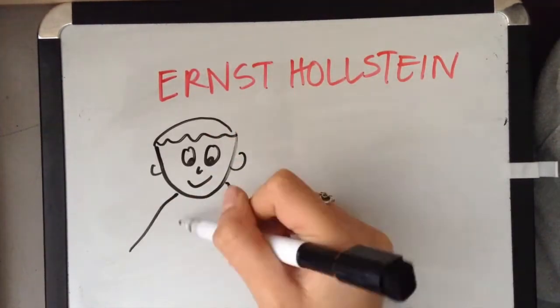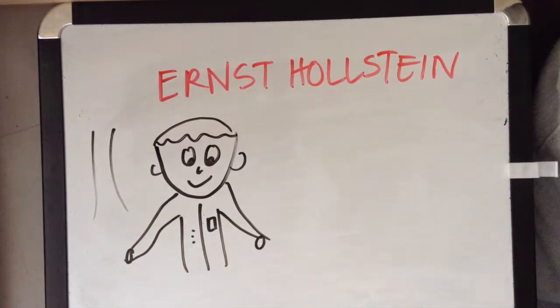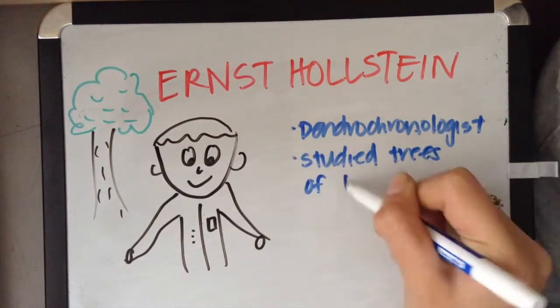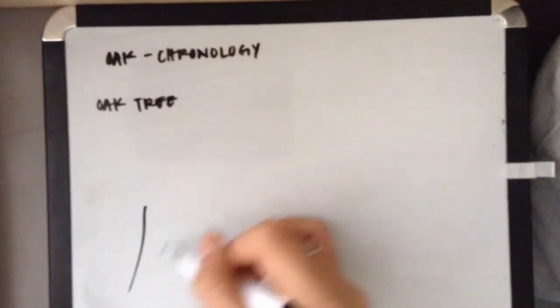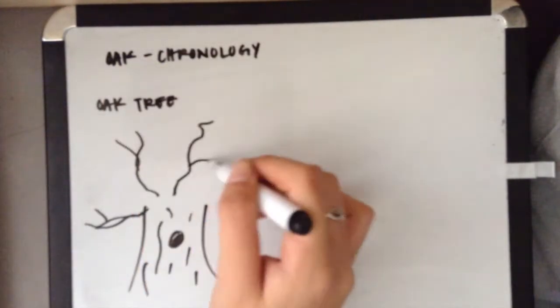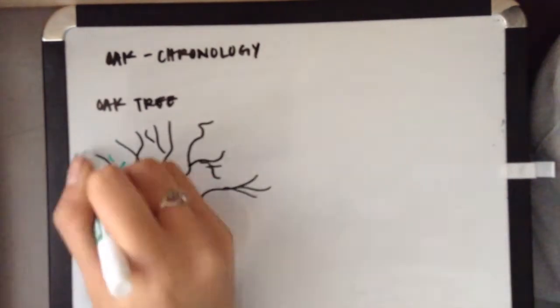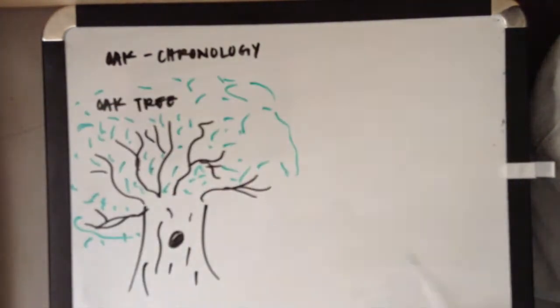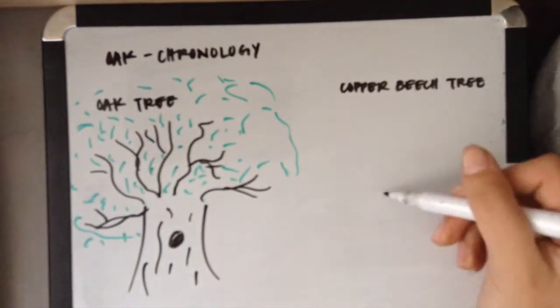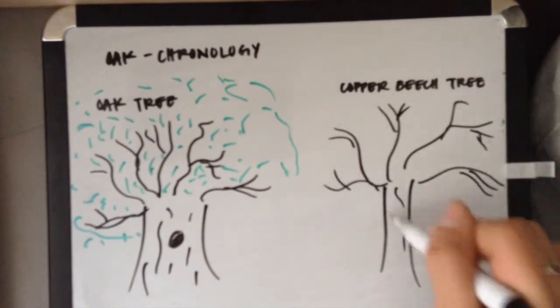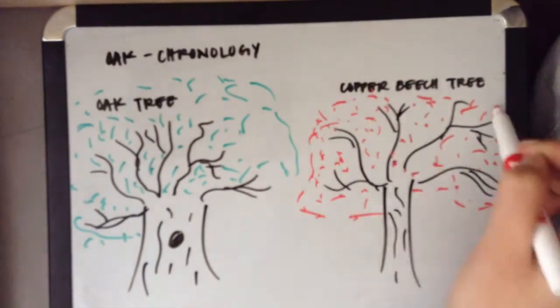He then learned of a man named Ernst Hallstein, a dendrochronologist who specifically studied the trees of medieval times. Hallstein used a method known as oak chronology in which he specifically observed the tree stems of oak trees. However, he could not find any oak trees to fill in the gaps of the Middle Ages, so he decided to improvise by using copper beech wood trees to complete his findings.